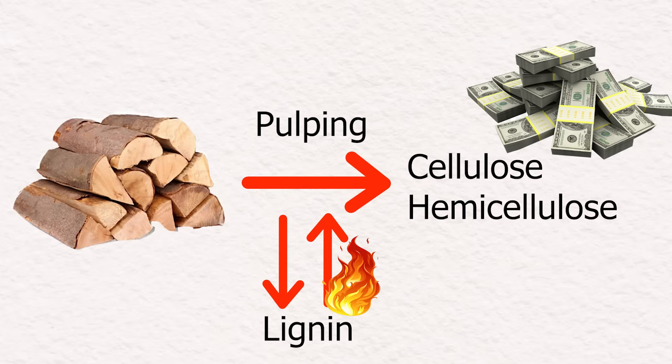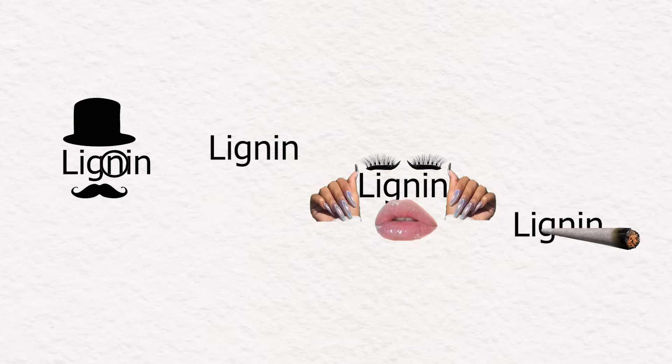So since there are many different pulping processes which use different chemicals, and they don't care about how the lignin comes out, there are also many different types of lignin, all of which have different properties and usability.